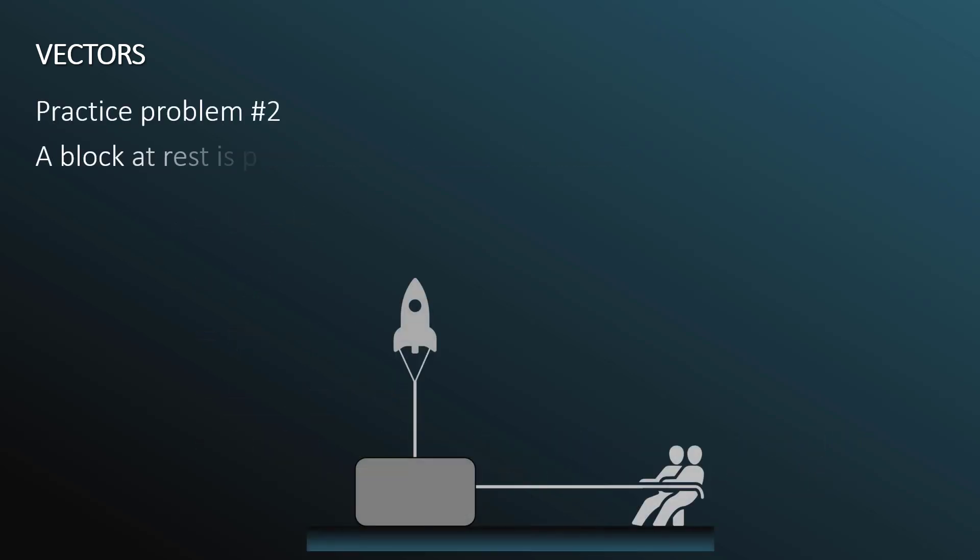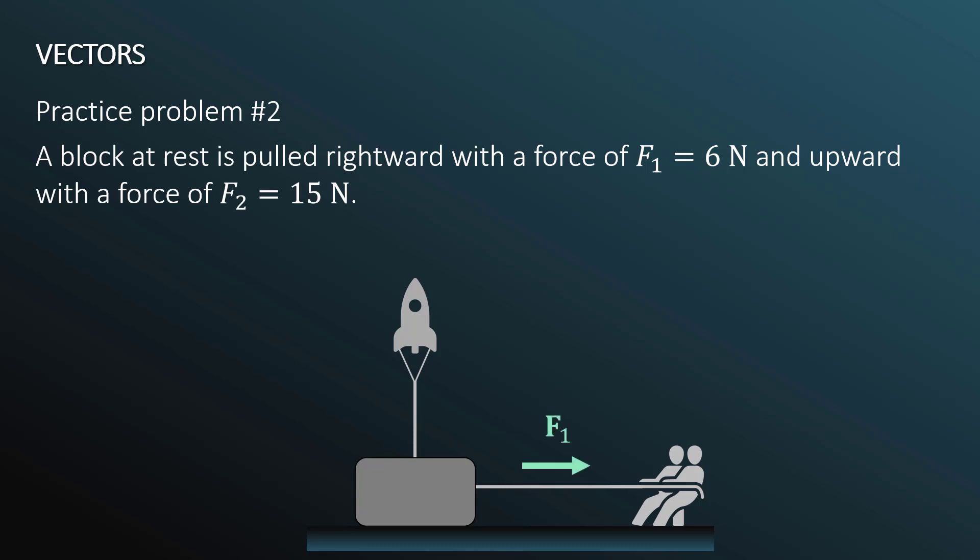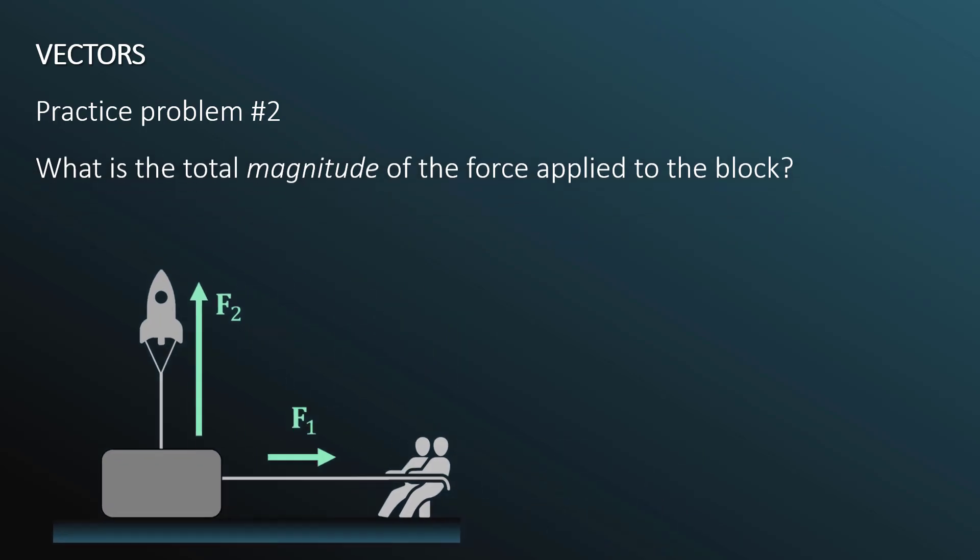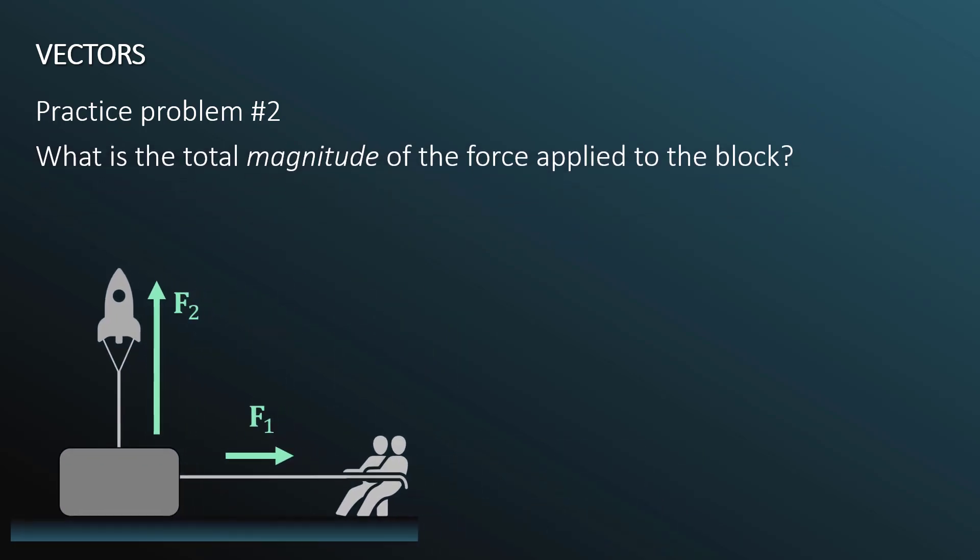Let's do another problem. A block at rest is pulled rightward with a force of f1 equals 6 newtons and upward with a force of f2 equals 15 newtons. F1 is pulling to the right, f2 is pulling up. The question is, what is the total magnitude of the force applied to the block?